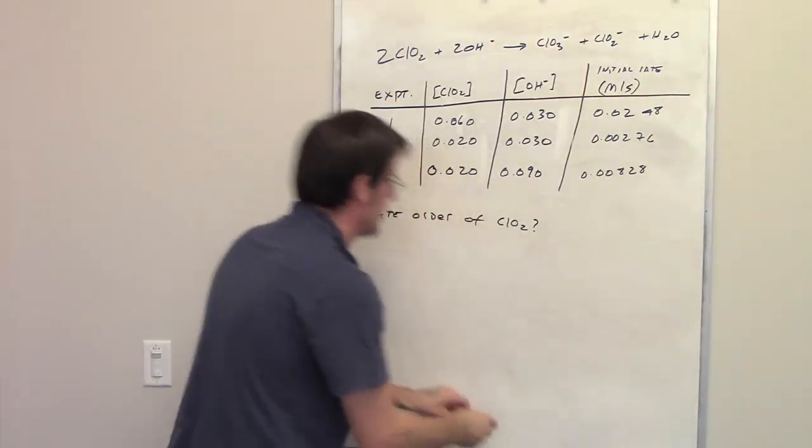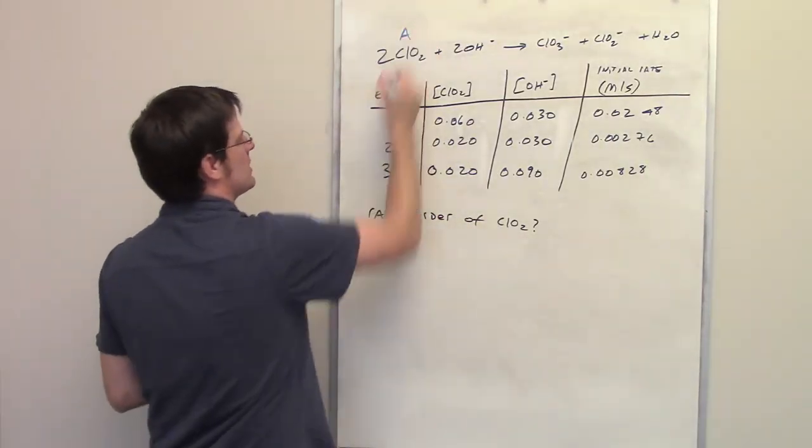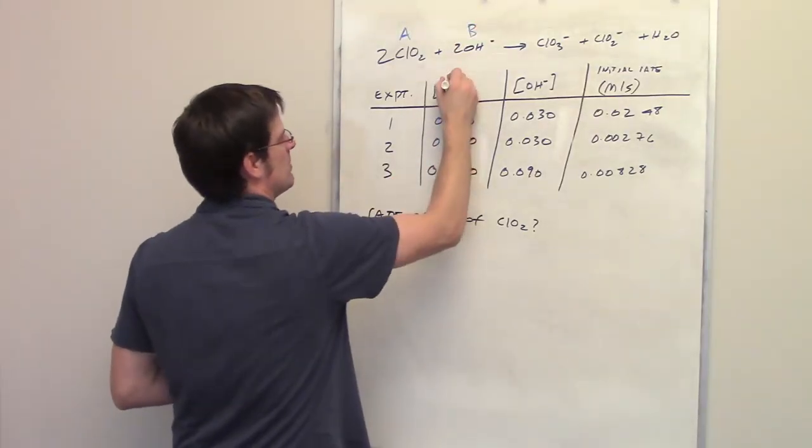In fact, if I can write some letters up here, I'm going to call chlorine dioxide component A and the hydroxide component B.